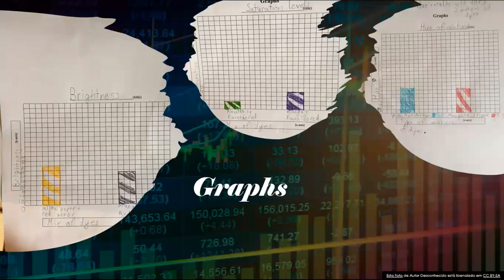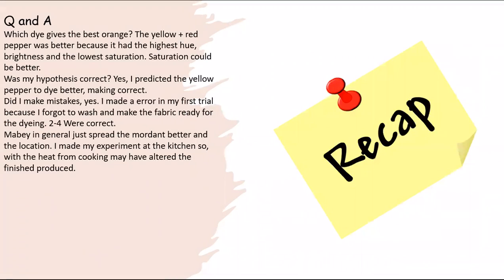I put that information in these graphs. Which dye gives the best orange? Yellow pepper plus red pepper gave the highest hue. My hypothesis was correct. There were some mistakes I made, but in general it was good.